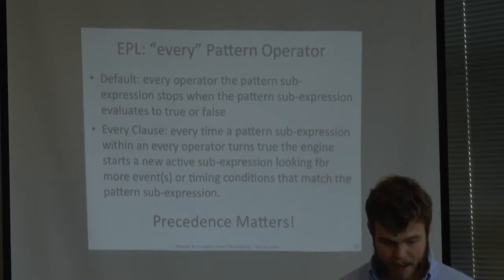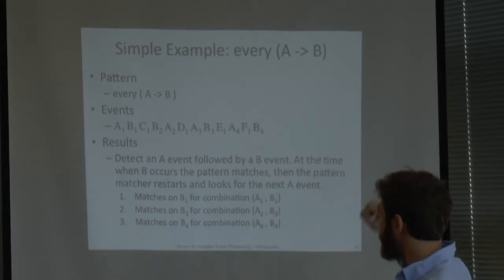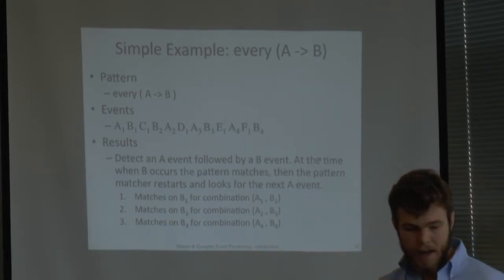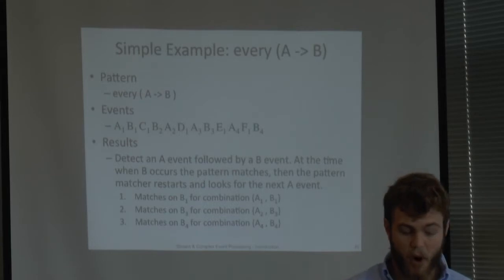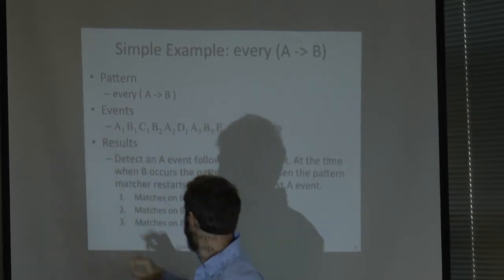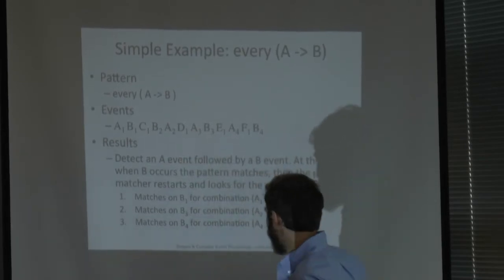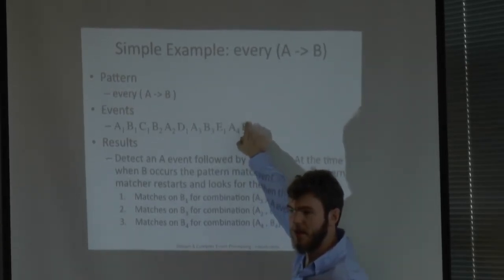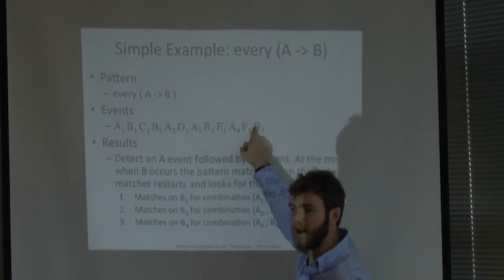For example: every A followed by B. We have events A1, B1, C1. This detects an event A followed by an event B. This query triggers on B1 because of this precedence - they are grouped together. And it triggers on B3 because B3 is immediately preceded by an A. Again the new trigger is on B4 because even though we have an event in the middle, the pattern matches - the followed-by relation is respected.